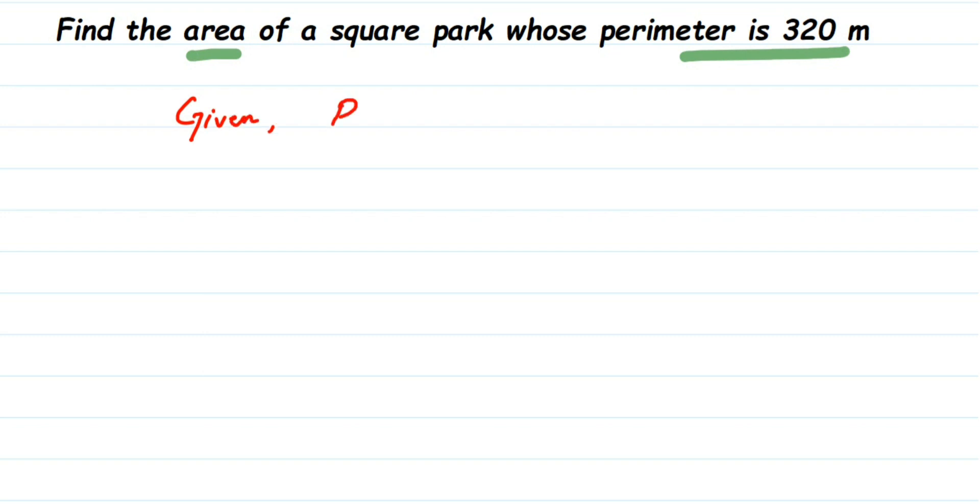So what is given here? Perimeter is equal to 320 meters. And what we know is the perimeter formula for a square: perimeter equals 4 times side.